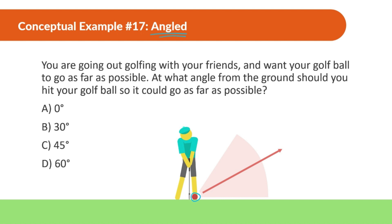The answer is going to be 45 degrees. When you are launched from the ground, if you want to go the furthest an object can go, you want to launch it from a 45 degree angle. Anything more and it won't go as far. Anything less and it won't go as far — meaning if they were all shot out at the same speed.